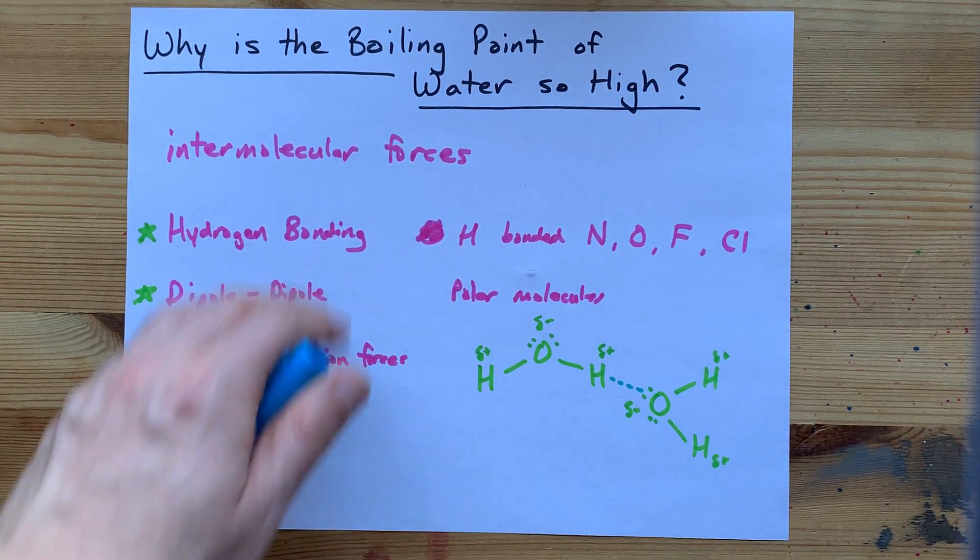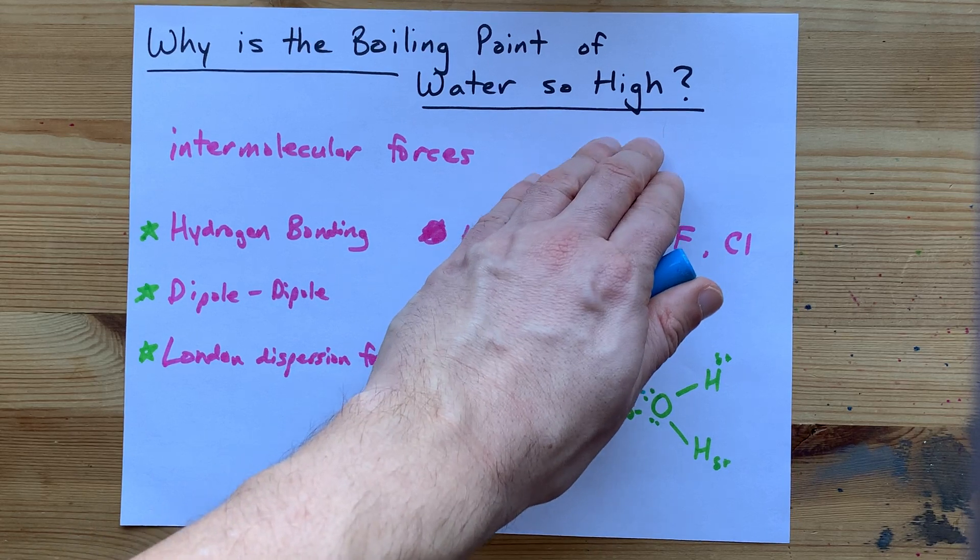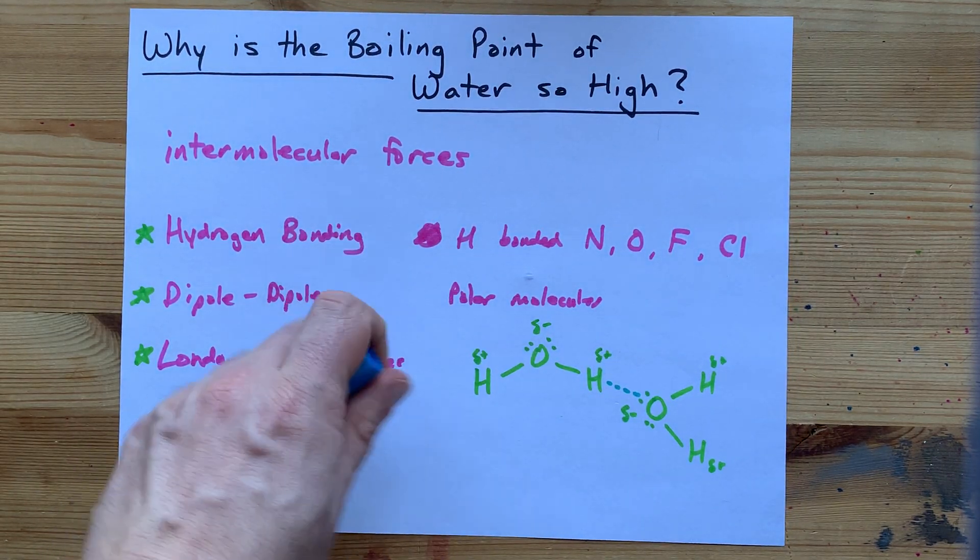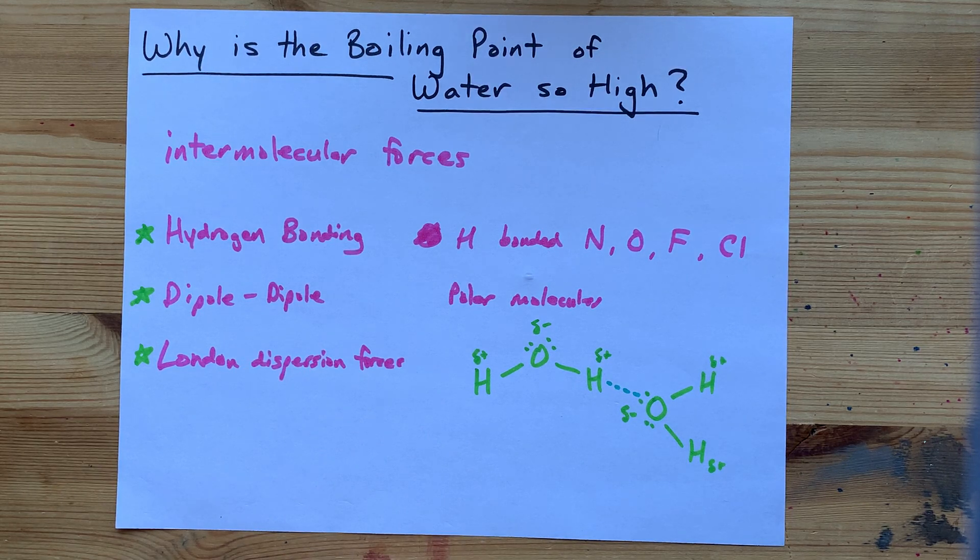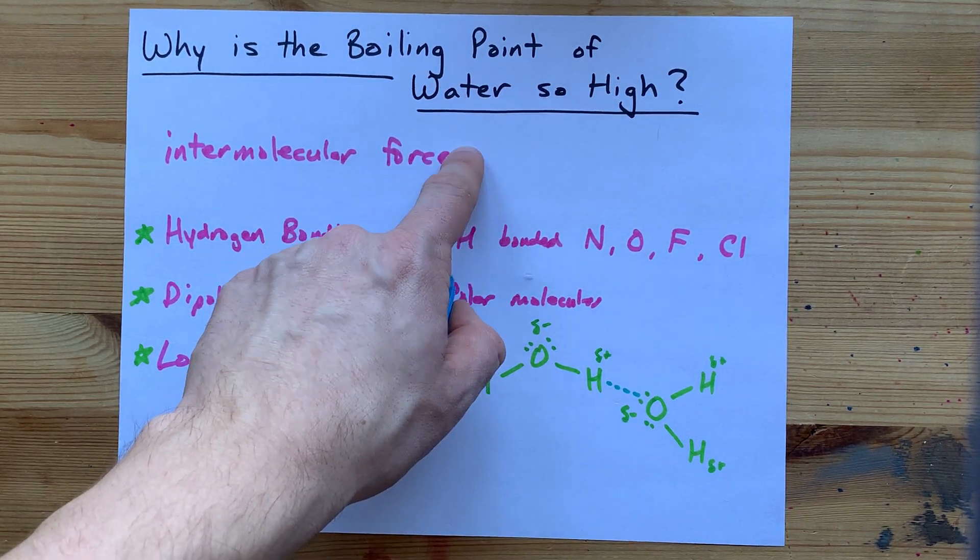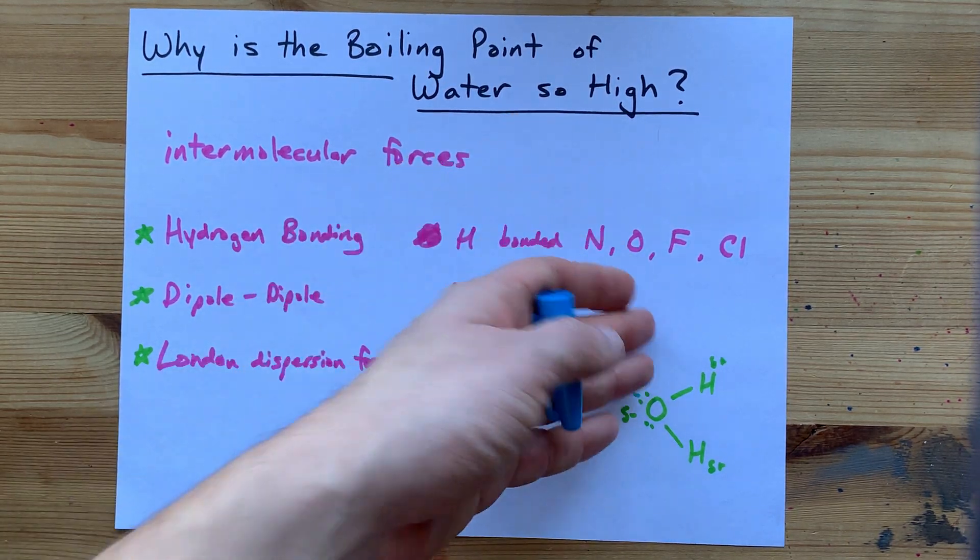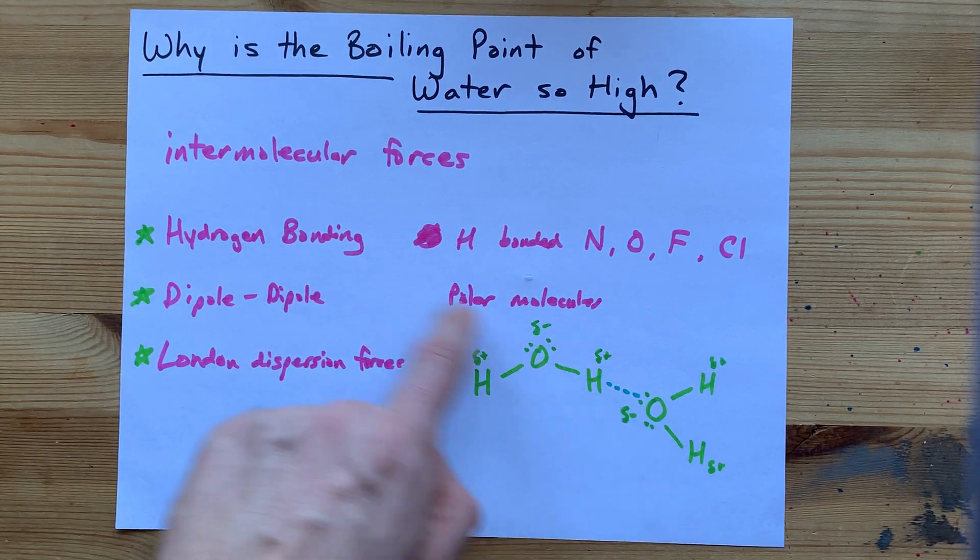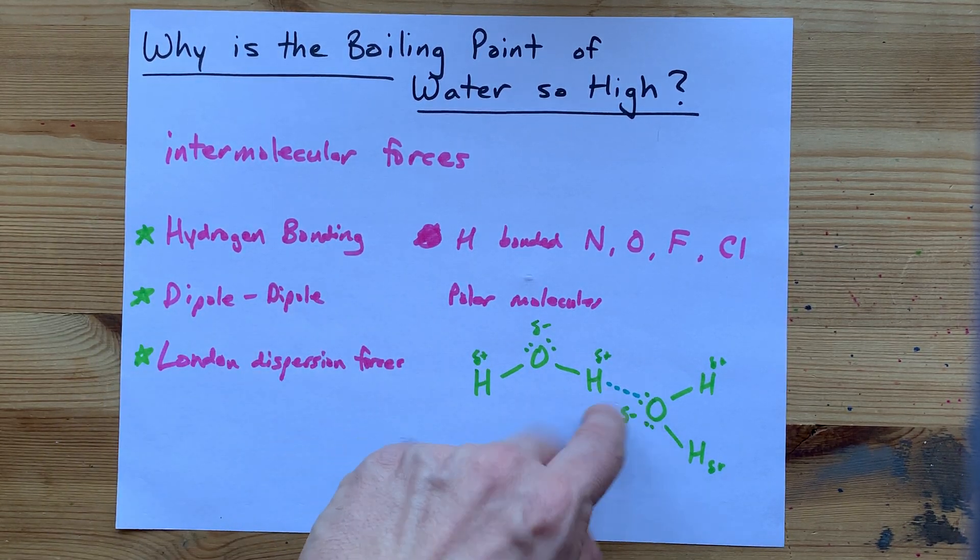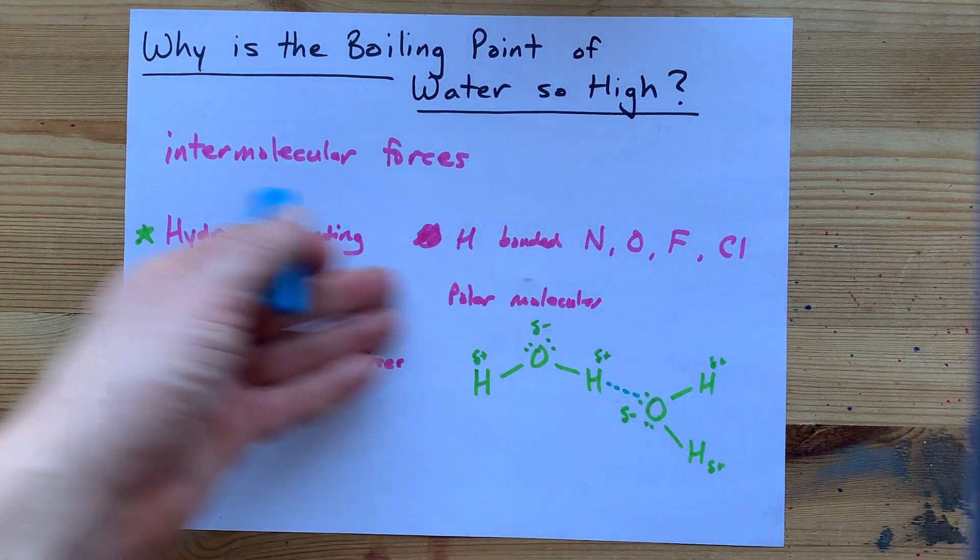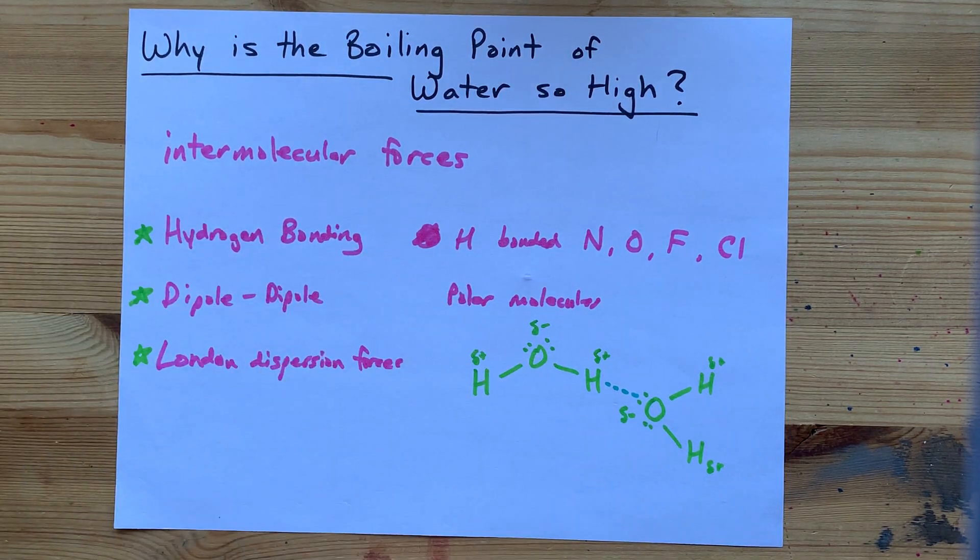To summarize, the boiling point of water is so high because water molecules have hydrogen bonding with each other. Among other intermolecular forces, hydrogen bonding is the strongest. And so the boiling point of water is much higher than lots of other molecular compounds because the primary intermolecular force holding molecules together is hydrogen bonding. Thanks for being with me, and best of luck.